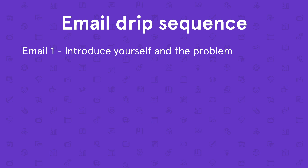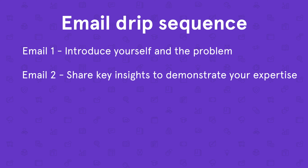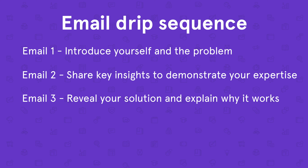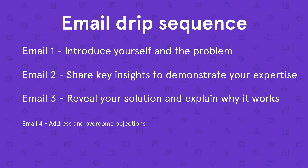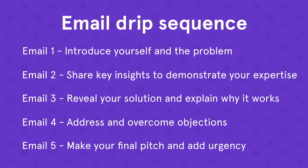Email one: introduce yourself and introduce the problem. Email two: share key insights about the problem to demonstrate your understanding. Email three: reveal your solution and explain why it works. Email four: overcome objections and address any reasons they might have for not buying. Email five: make your final pitch and possibly add some kind of urgency like a limited-time deal or guarantee. Once you put this sequence in place, it can work for you in the background as you continue to make new content that points to it.